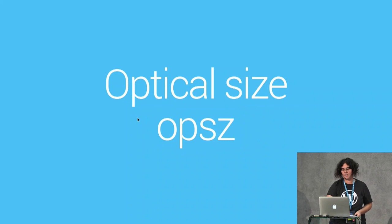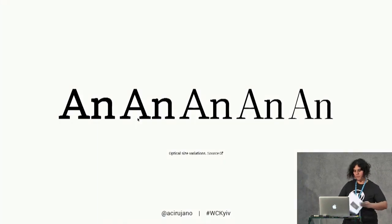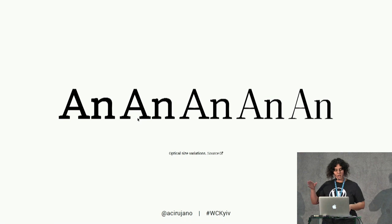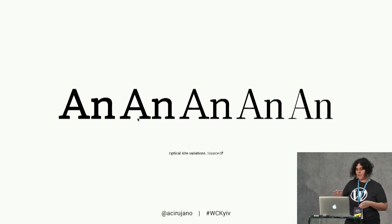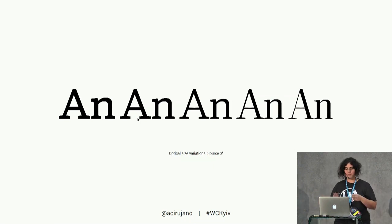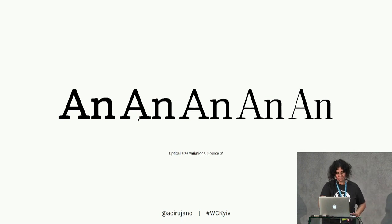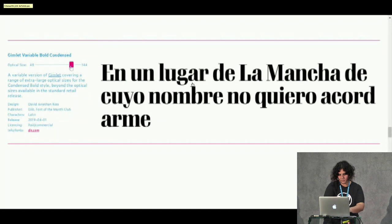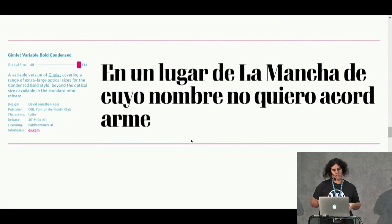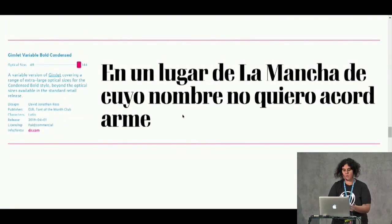Now let's see optical size. Optical size is an axis to improve legibility in smaller sizes. On the right you can see the glyphs for bigger sizes with more contrast and detail. On the left, an example with less contrast and detail — and this is all achieved with just one font file.